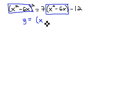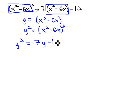If we make y equal to that block of x squared minus 6x, and y squared would be that block squared, x squared minus 6x squared, the equation then becomes y squared equals 7y minus 12. Notice, we just replaced the blocks with y's.